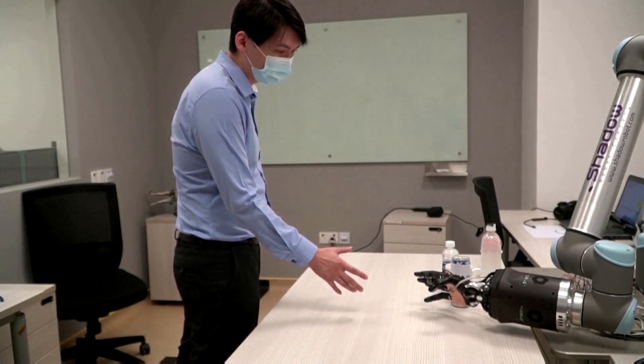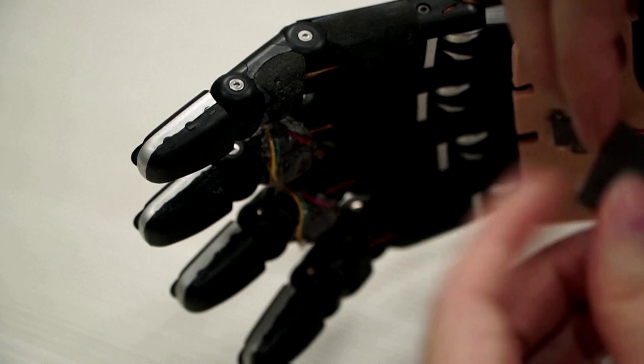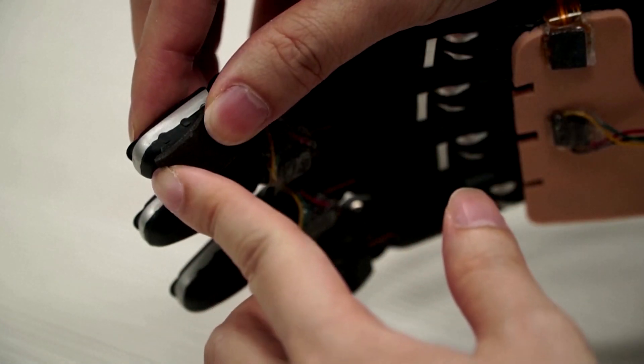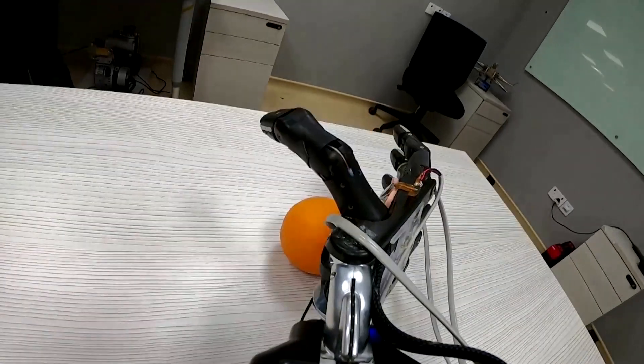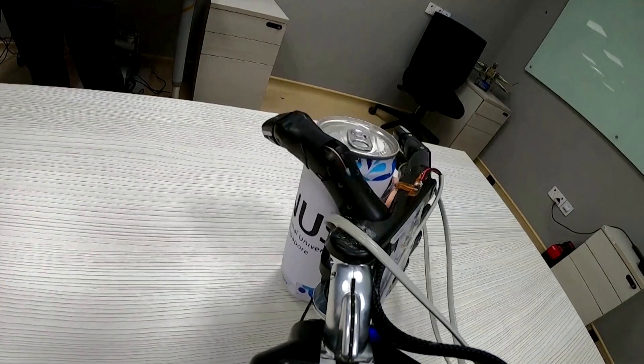Watch how this robot can tell when an object is close. It's all thanks to a smart foam material developed by researchers at the National University of Singapore. It can sense proximity, pressure and it even self-heals, just like human skin.